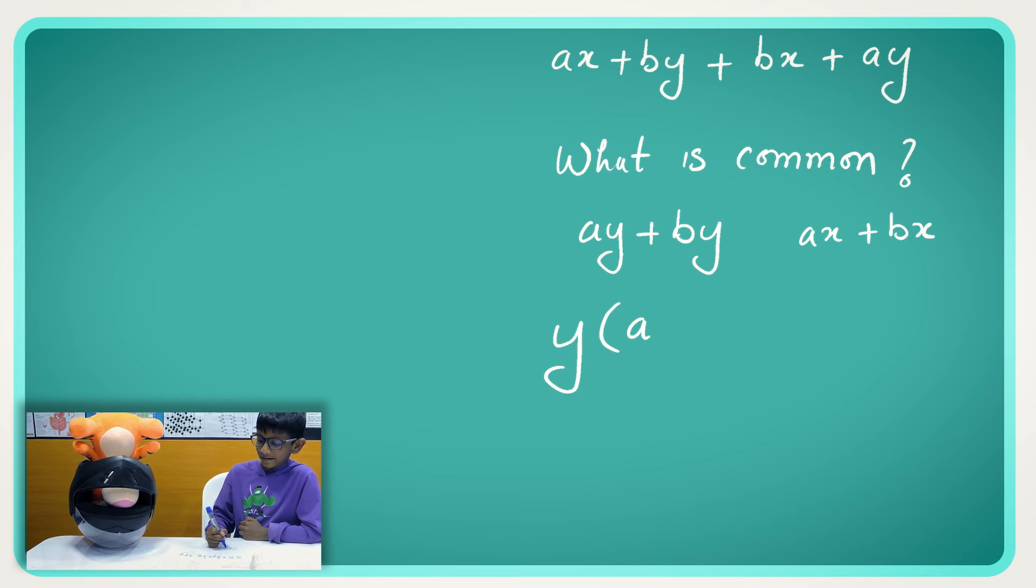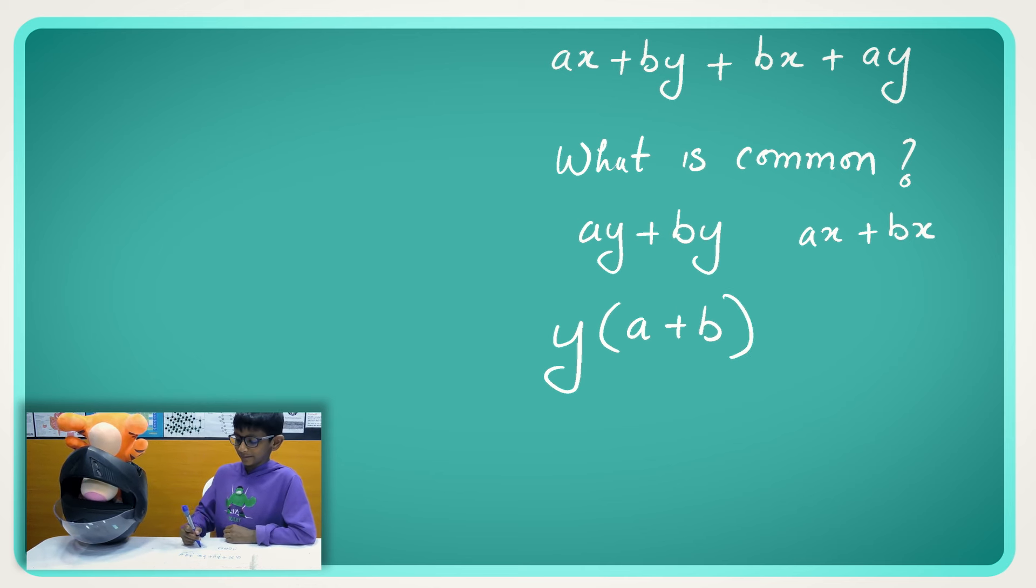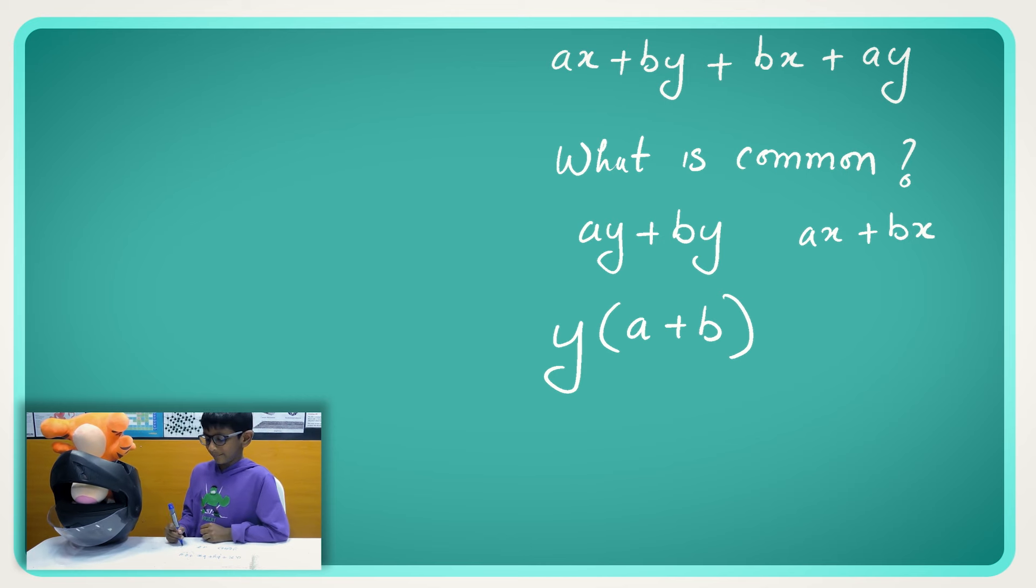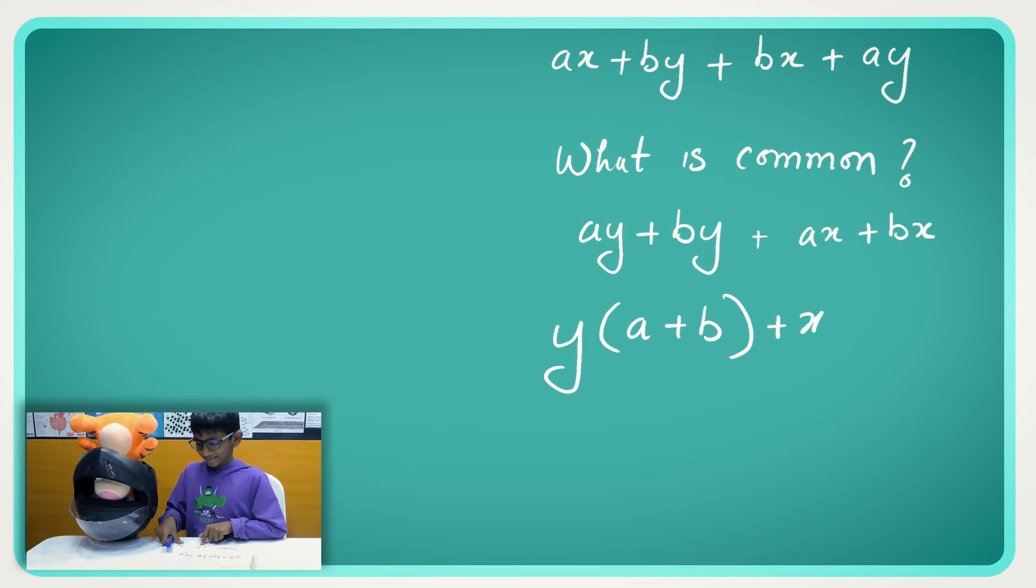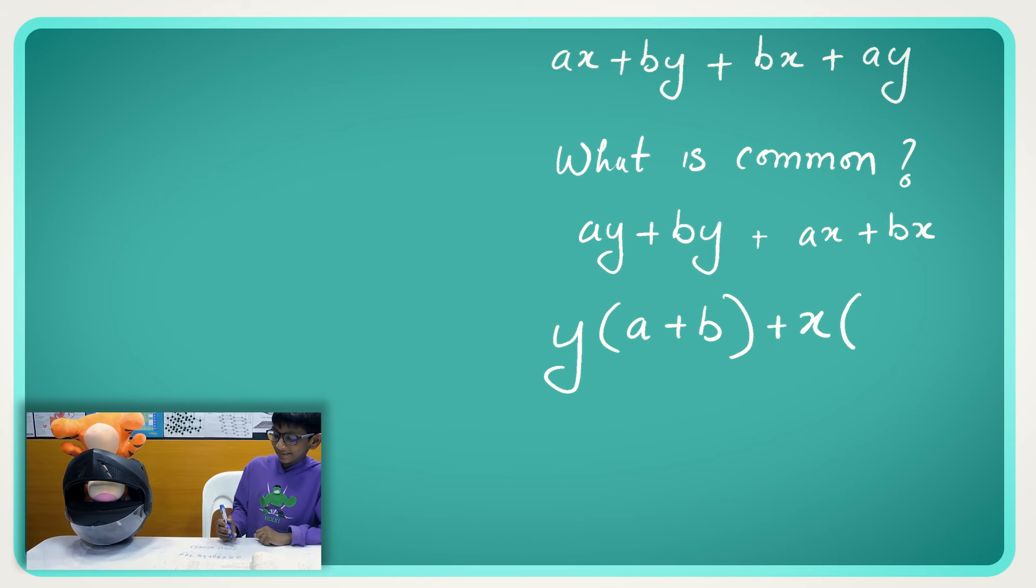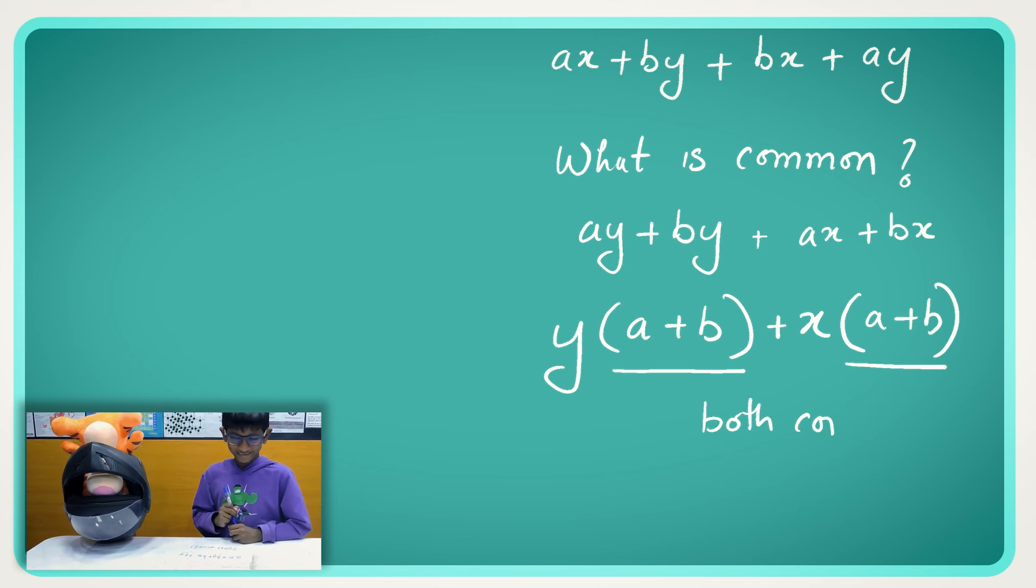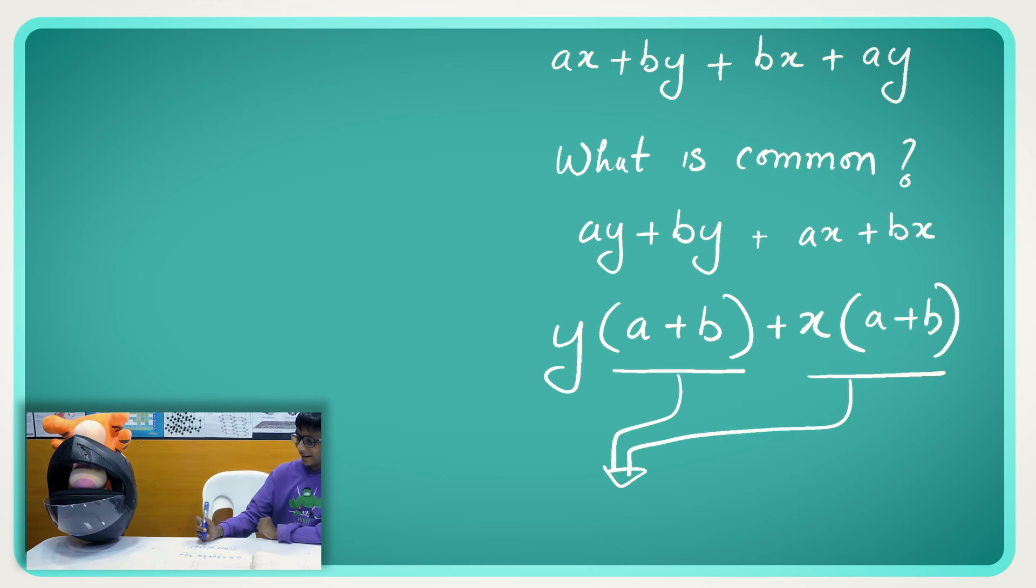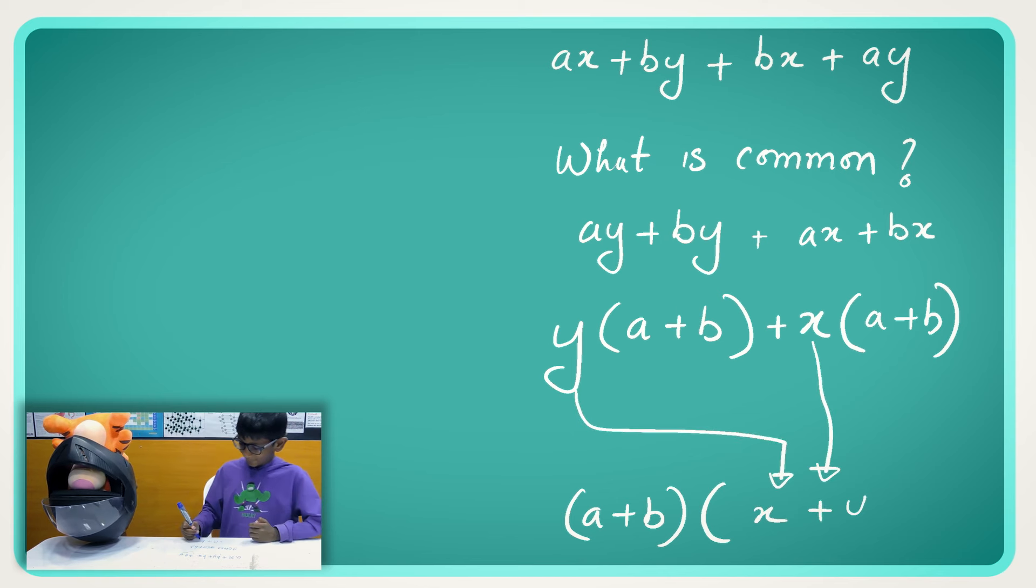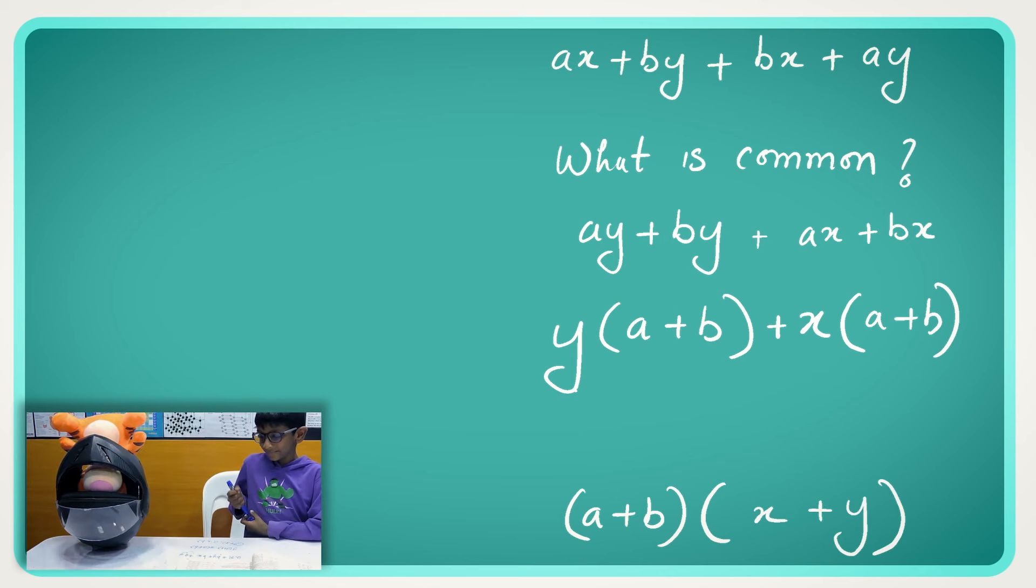A and B. So now we'll take the AX and BX. What is common in this? What is common in Y and A plus B? And X bracket A plus B? What is common in Y bracket A plus B? A plus B. Yeah, and then we did, so we add the two groups together. There is a checking method.